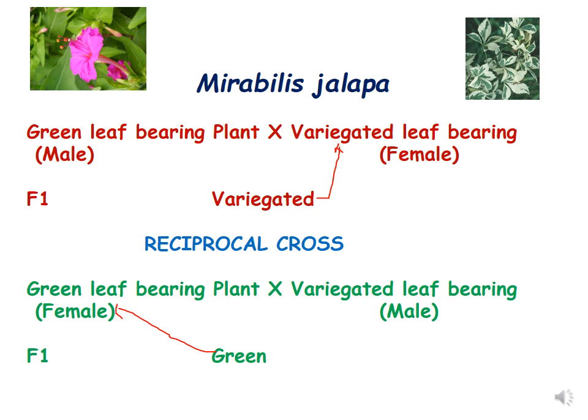So in the reciprocal cross the results were opposite — the F1 progeny resembled the mother plant. This was different from the crosses shown by Mendel, and it was not following Mendelian laws of inheritance. Because the F1 progeny resembled the mother plant, this was called maternal inheritance.